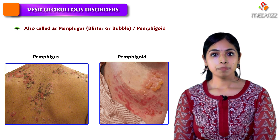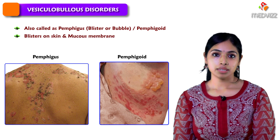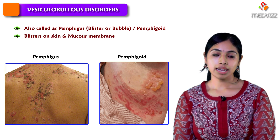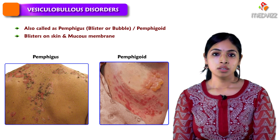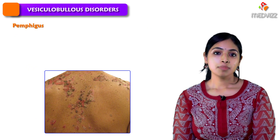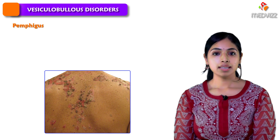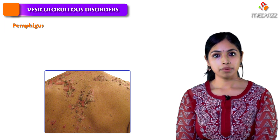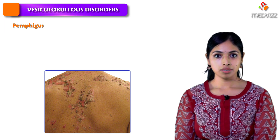In Pemphigus or Pemphigoid disorders, we usually see blisters on the skin as well as the mucous membrane. First I'm going to talk about the Pemphigus disorders, then I'm going to talk about Pemphigoid and other Vesiculobullous disorders.